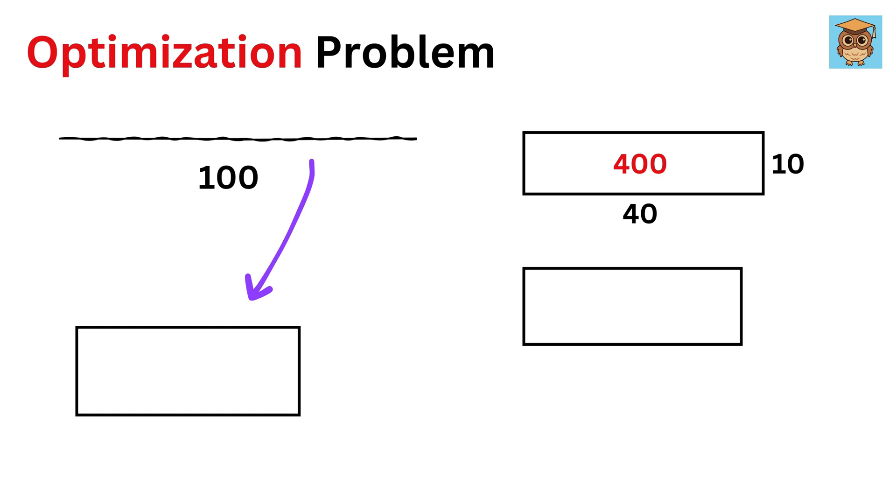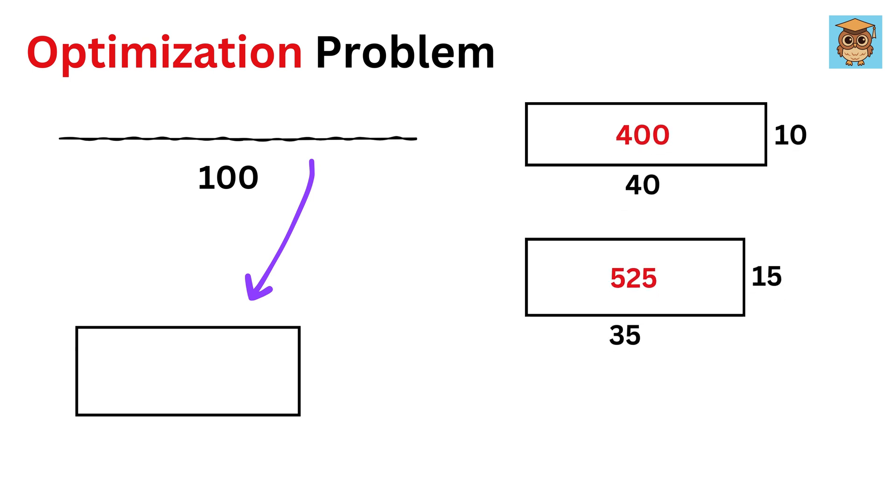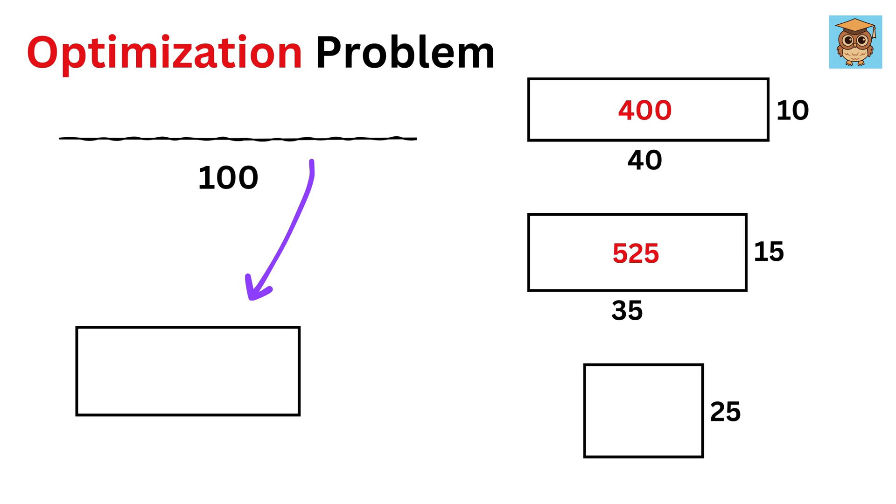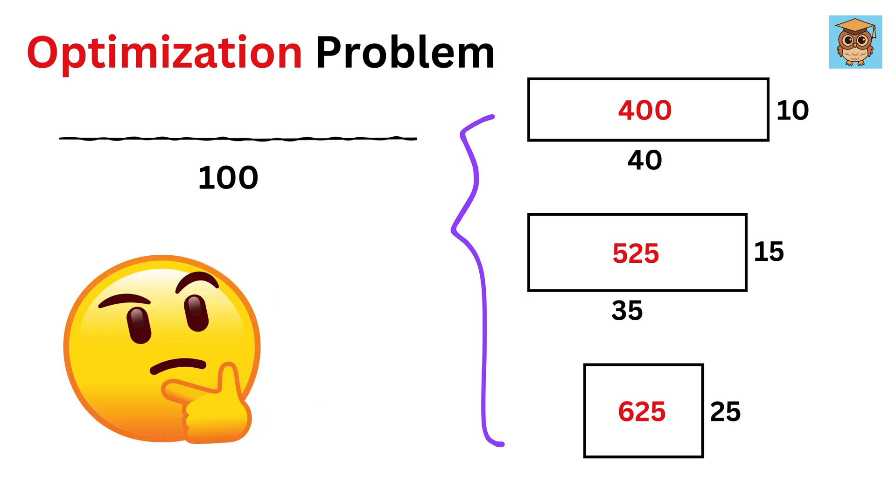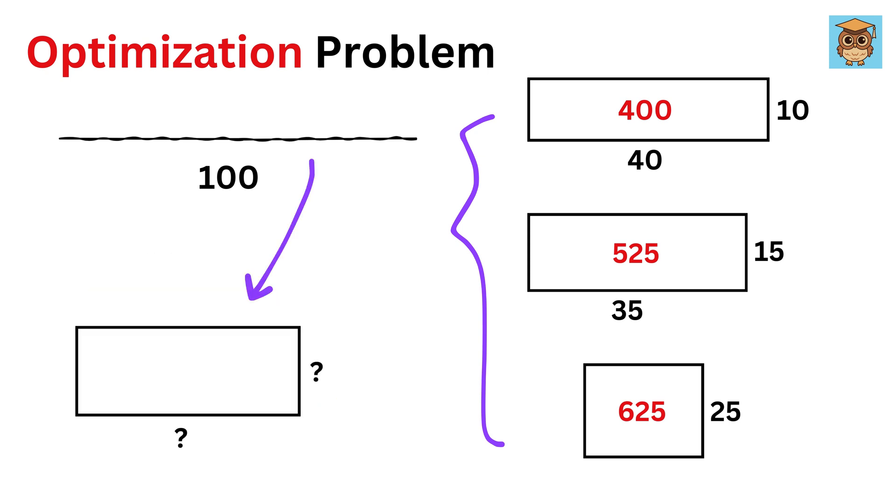You can also make a rectangle of length 35 and width 15, whose area will be 35 times 15 or 525 square units, or we can make a square from it of length 25 and an area of 625. We can make infinitely many rectangles from this wire, but the main question is, what dimensions of this rectangle would give you the maximum area? This is a classic problem that beautifully illustrates how optimization works in math.